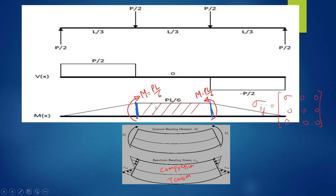For this case, we can think of a constant bending moment — a couple — applied from left and right, whose value is PL by 6 at both ends. Due to this constant applied bending moment, a deformed shape develops, and normal stresses sigma_xx — called bending stresses — develop. Above the neutral axis there is a compression zone, and below it a tension zone develops.